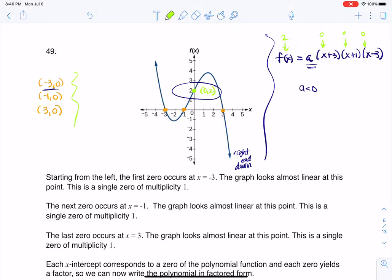So I'm going to plug in that ordered pair and solve for a, and my a value should be negative. So I get 2 is equal to a times 0 plus 3 times 0 plus 1 times 0 minus 3. So I have a times 3 times 1 times negative 3. So that looks like 2 is equal to negative 9a, or a will be negative 2 9ths.